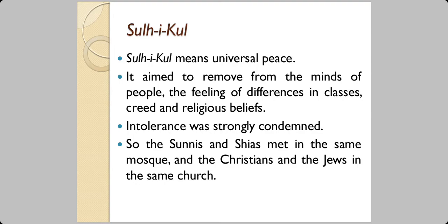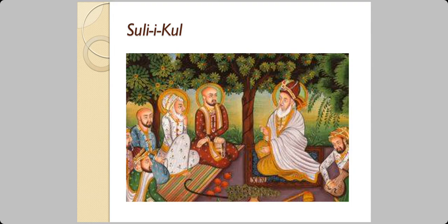He practiced something known as Sulha Ikkul, which means universal peace. The aim of this was to remove from people's minds the feeling of differences in classes, creed, and religious beliefs. He strongly condemned and did not tolerate differences in classes, creeds, and religions — the intolerance was what he did not tolerate. So the Sunnis and Shias met in the same mosque, and the Christians and Jews in the same church. This is a painting of the emperor himself with people of different faiths at a meeting of Sulha Ikkul.